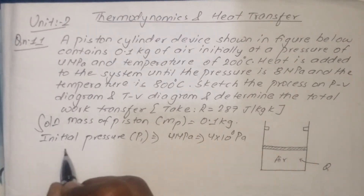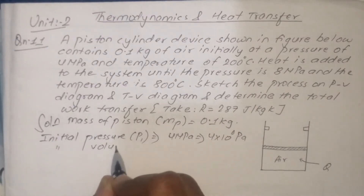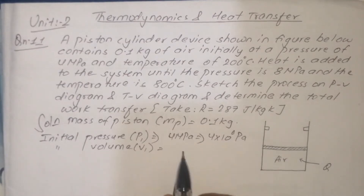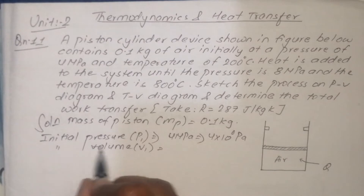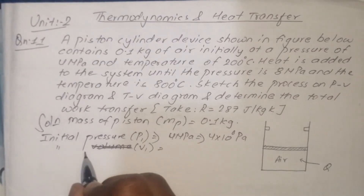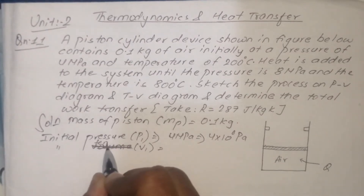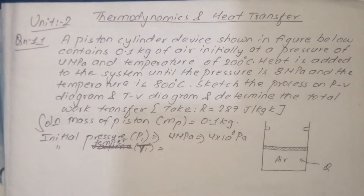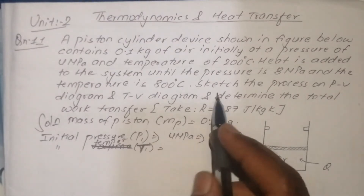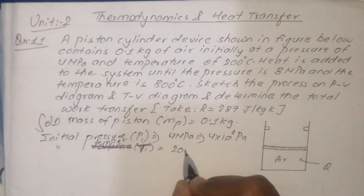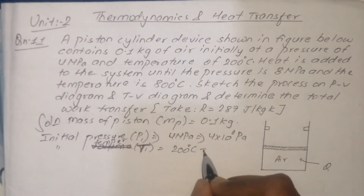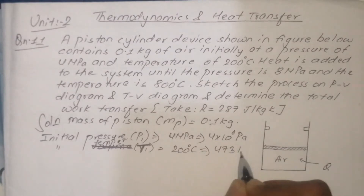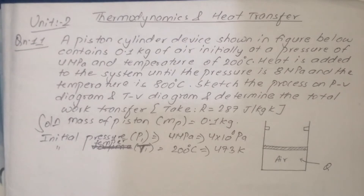This is the initial volume. The initial temperature is given. Initial temperature T1 is 200 degree Celsius, which equals 200 plus 273, giving 473 Kelvin. This is the initial temperature value used for the calculation.